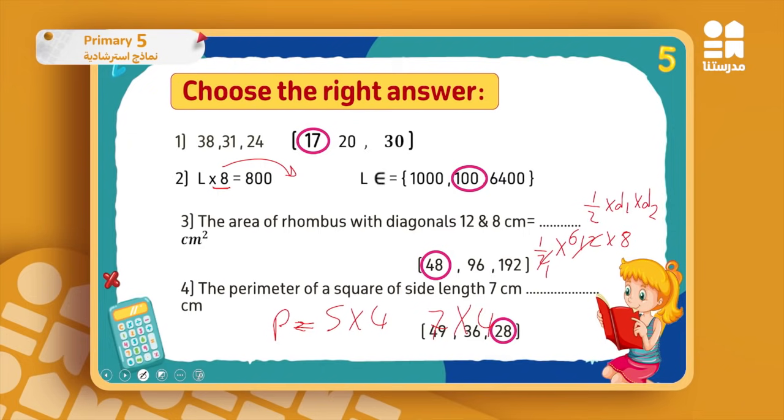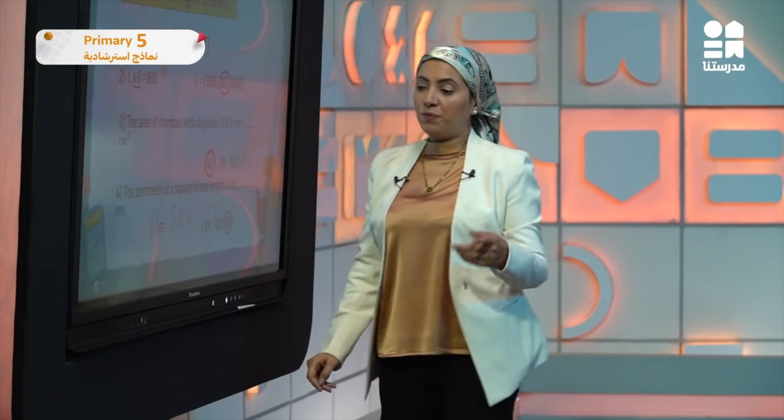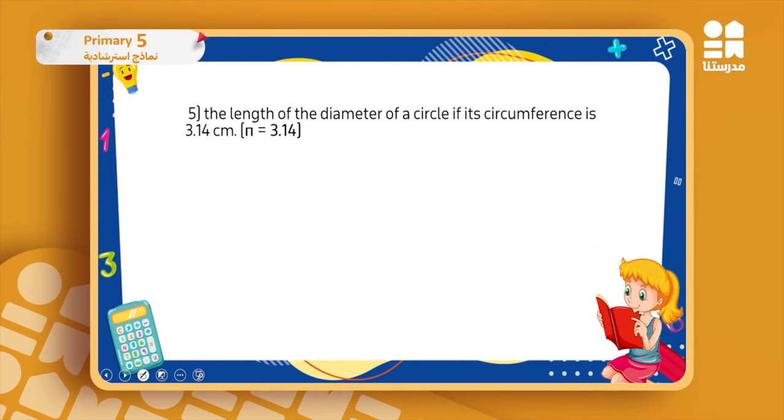Now we move to the rest of the questions. Here: the length of the diameter of a circle if its circumference is 3.14 centimeters and π is 3.14. How do we answer this one? I have the choices 3, 1, and 1. The rule for circumference of a circle equals d times π, which is here 3.14.